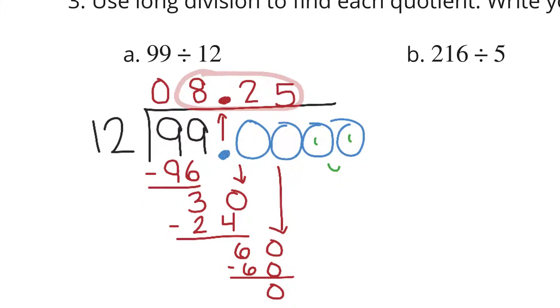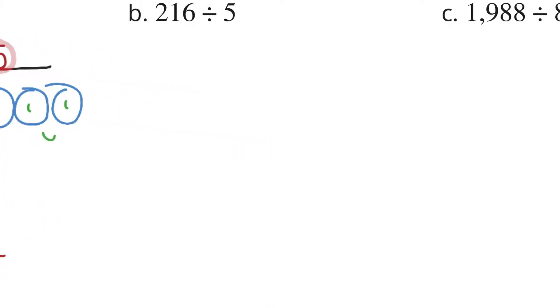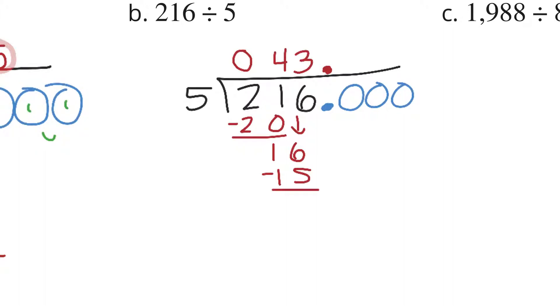As we move on to b, 216 divided by 5. 5 doesn't go into the 2 for the hundreds, but it goes into the 21 about 4 times. 4 times 5 is 20. You get 1 left. Bring down your 6 from the 1s. It goes in about 3 times, because 5 times 3 is 15. You're left with 1. Bring down the 0 from the tenths place. 5 times 2 is 10. You're left with no remainder. Our final answer here is 43 and 2 tenths.